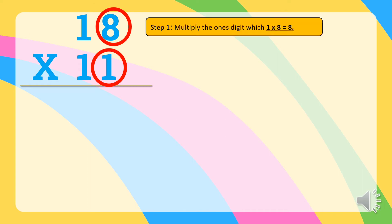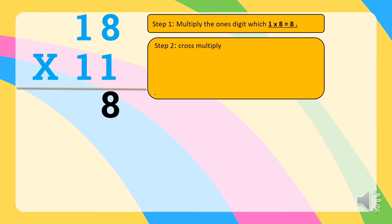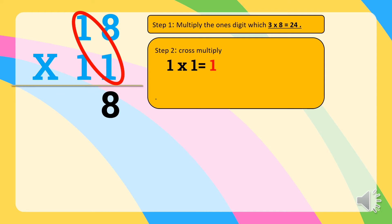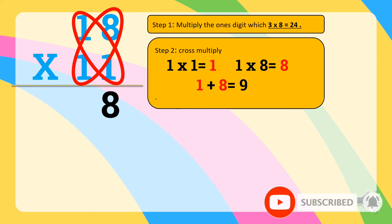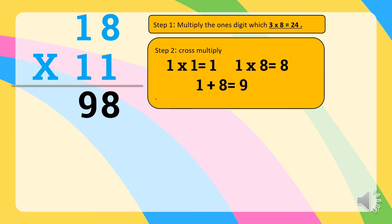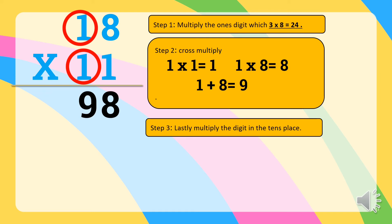So how about multiplying 18 and 11 mentally? Step 1: multiply the ones digit — 1 times 8 is equal to 8. Step 2 is to cross-multiply. So let's cross-multiply: 1 times 1 is equal to 1. Then 1 times 8 is equal to 8. So let's add 1 plus 8 is equal to 9. Lastly, step 3 is to multiply the digits in the tens place: 1 times 1 is equal to 1.